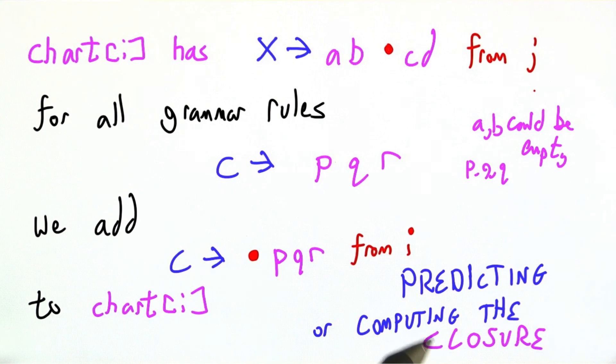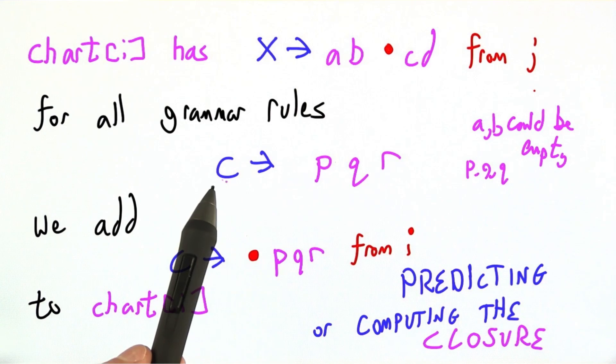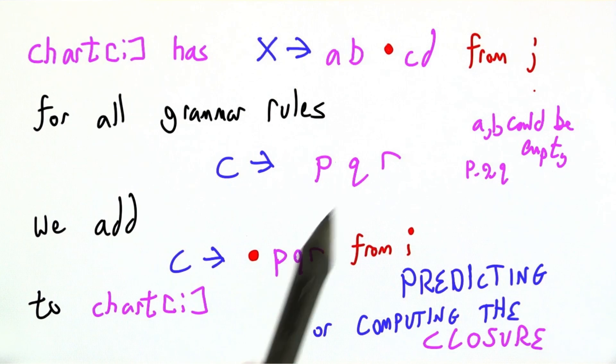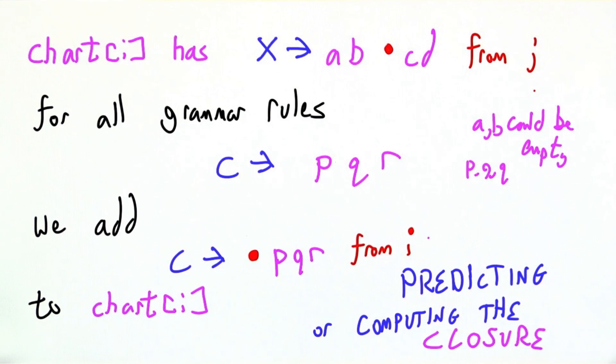It's also called computing the closure, a more technical term from language theory. We're right before a C. Any rule that has C on the left hand side should be brought in to close the state so that all possibilities are considered.